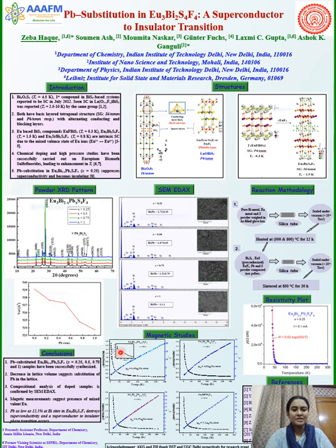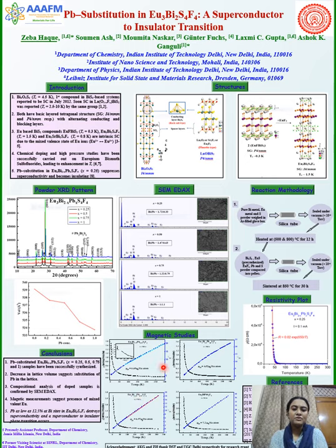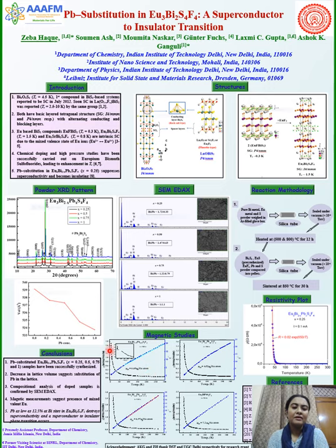DC magnetization studies at 50 Oersted for all samples were carried out in zero field cooled mode. For x = 0.25, the sample is paramagnetic with an ordered paramagnetic moment value close to 6.7 Bohr magneton per europium atom per formula unit. The insert shows antiferromagnetic ordering corresponding to Eu2+ spins at 2.3 Kelvin.